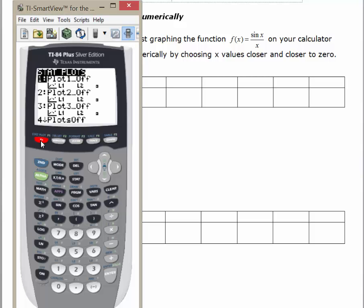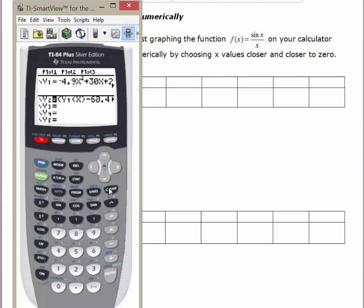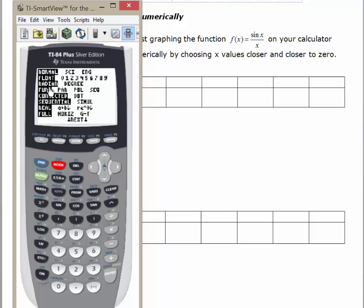Go to our y equals and we'll clear anything out that's in there. We're going to do y equals sin(x), close the parentheses, divided by x. I also want to make sure that I'm in radian mode. Most of the time, we're going to be in radian mode in calculus because radians are real numbers. When we work with triangles, we will change to degree mode. But we're in radian mode for now. I'm going to quit out of here.